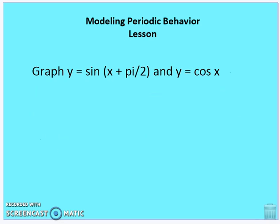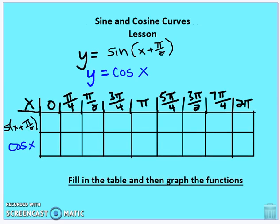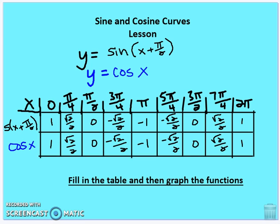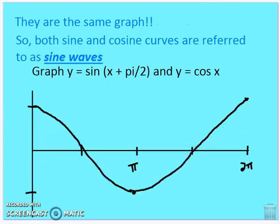Now graph y equals sine of (x plus pi over 2) and y equals cosine of x — create your table first. You should find that all of the values are the same. So sine of (x plus pi over 2) and y equals cosine of x are the same function. That's why we refer to both sine and cosine curves as sine waves, because cosine is just a shift of pi over 2 from sine.